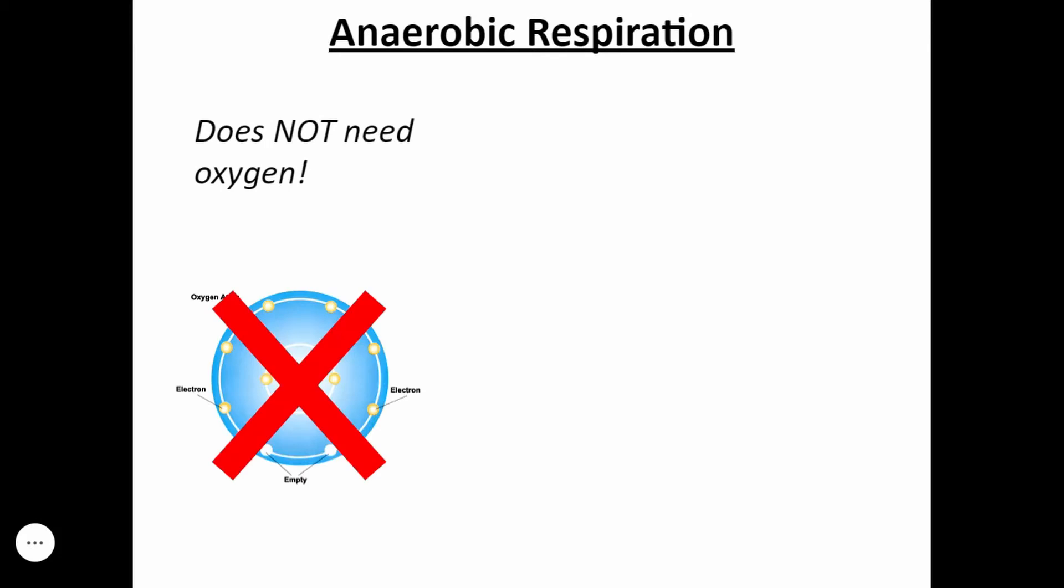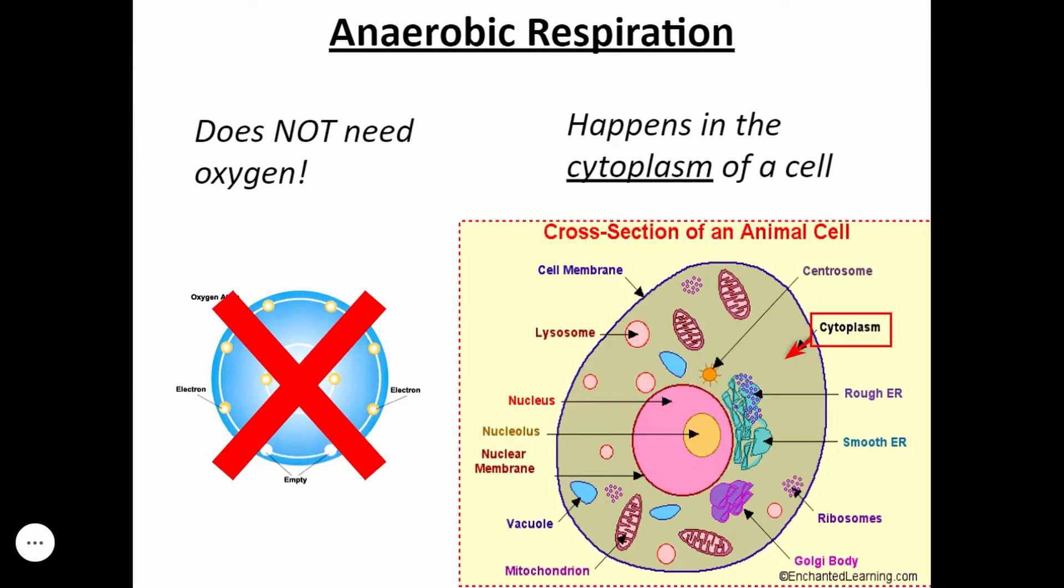Anaerobic respiration does not need oxygen, and it happens in the cytoplasm of the cell. Now let's talk about the steps that are in cellular respiration. The first step is called glycolysis.